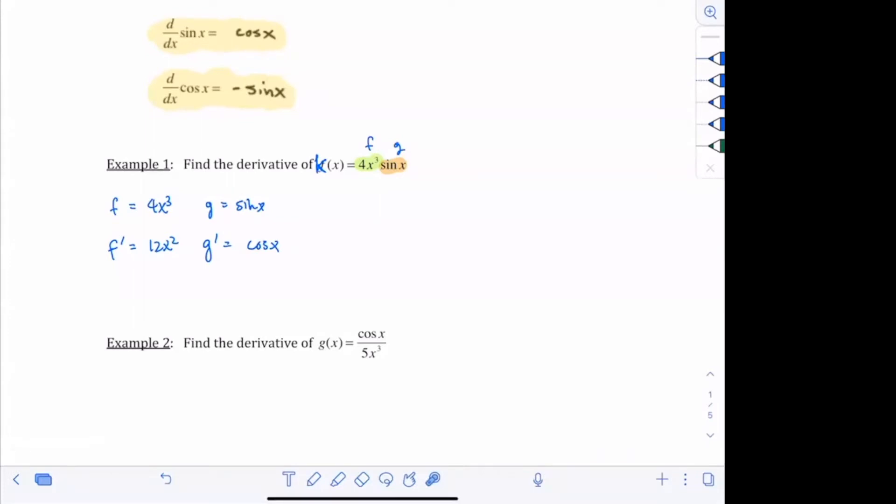So really the new part is just this, finding this g prime here. The rest of it is just section 2.3.